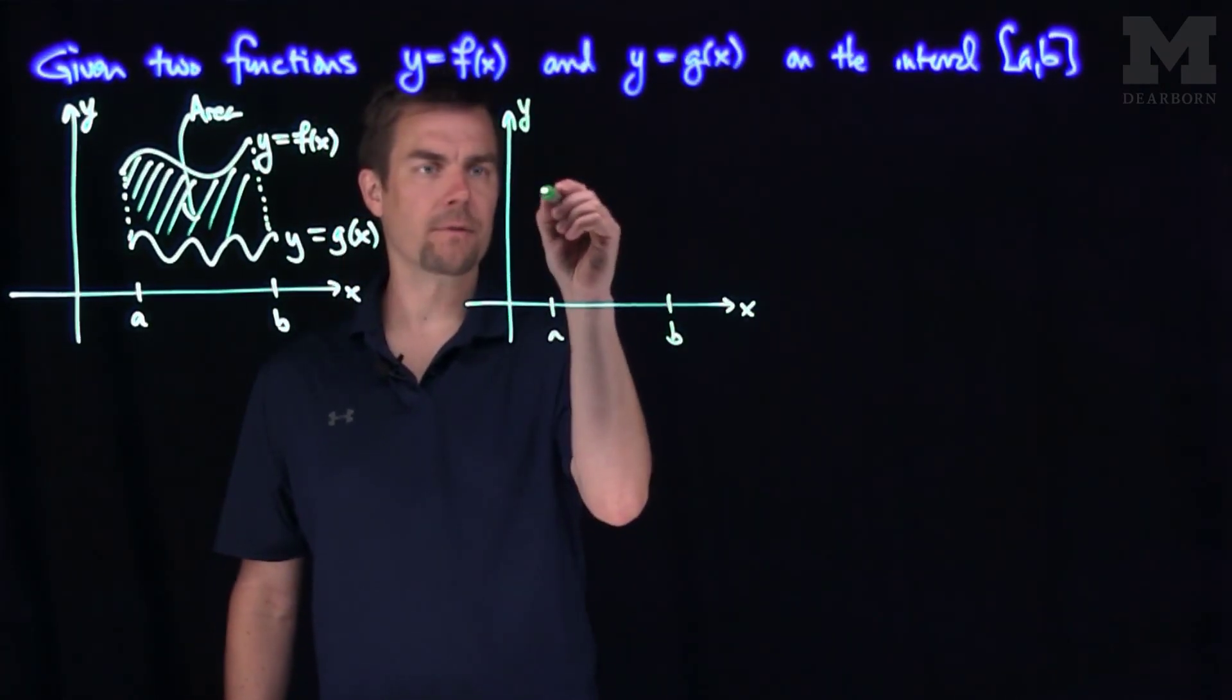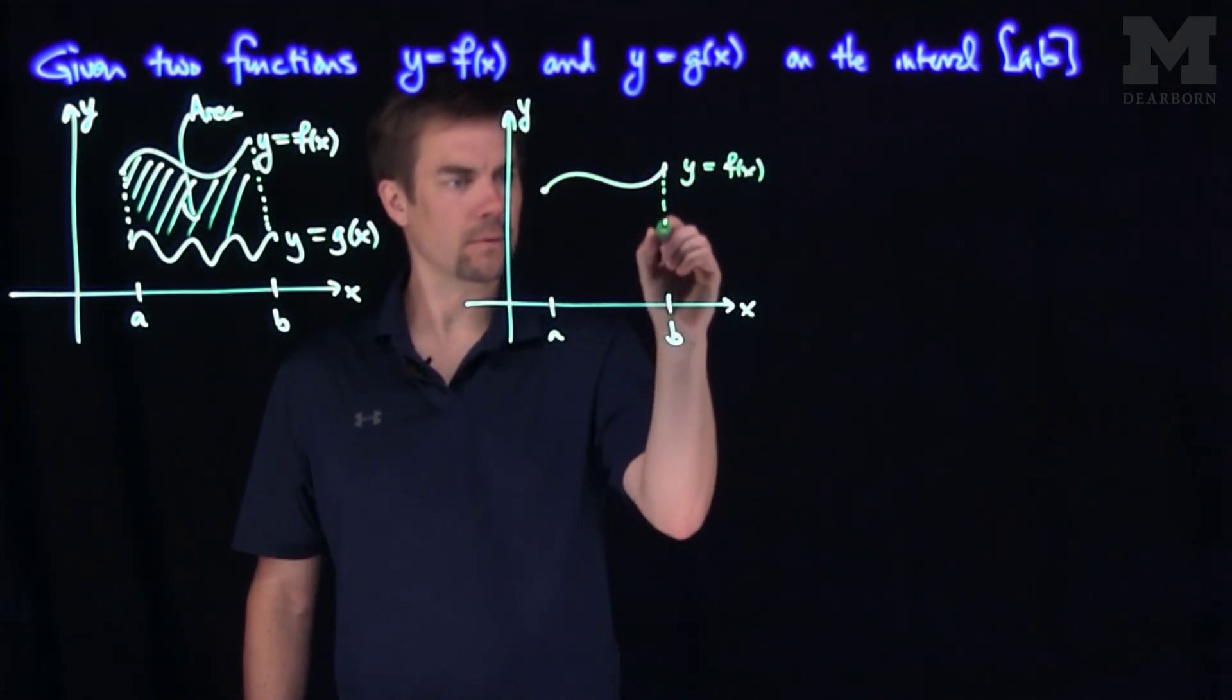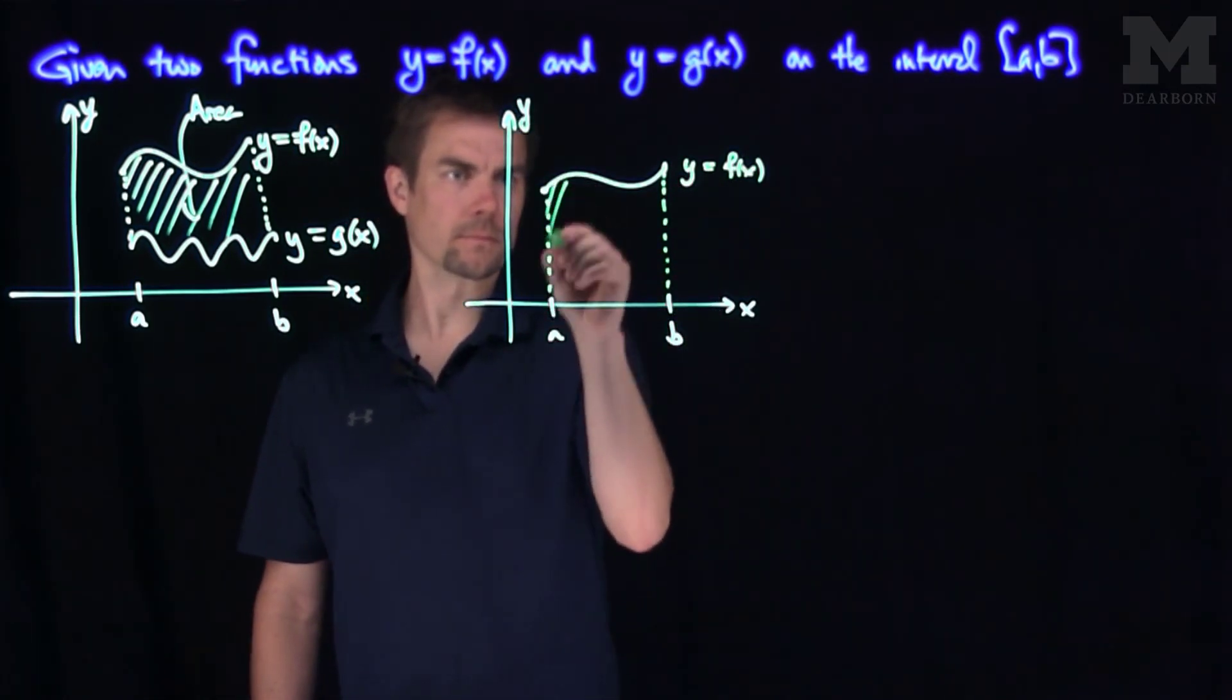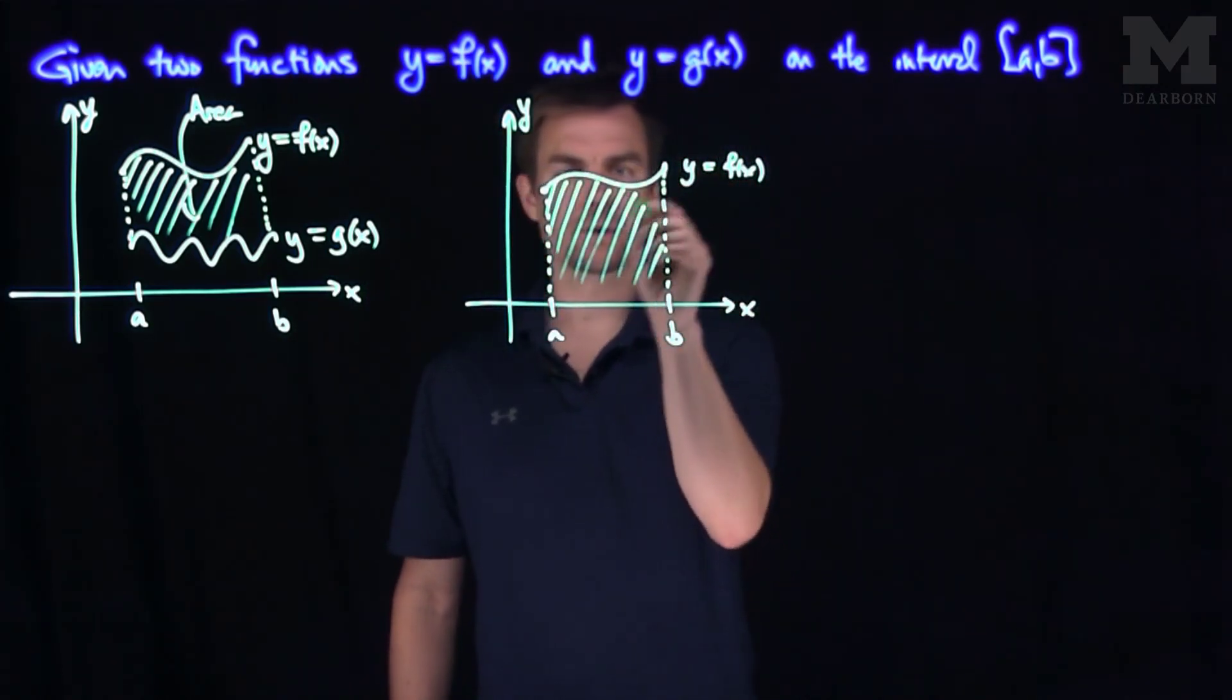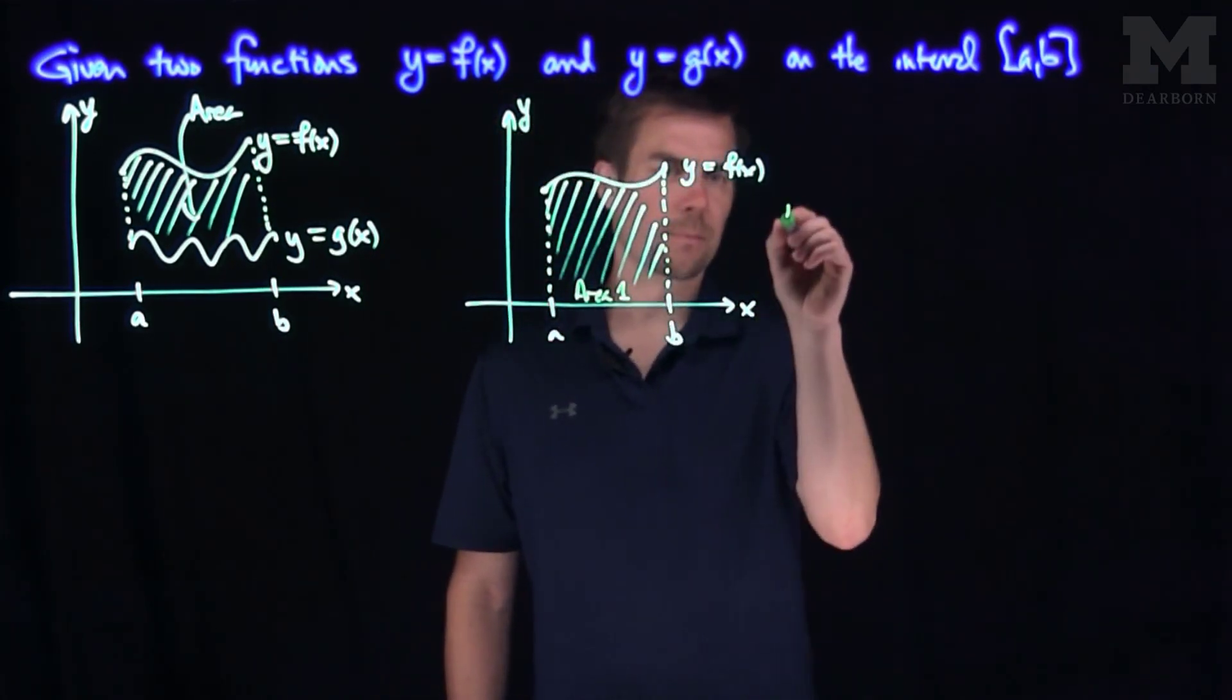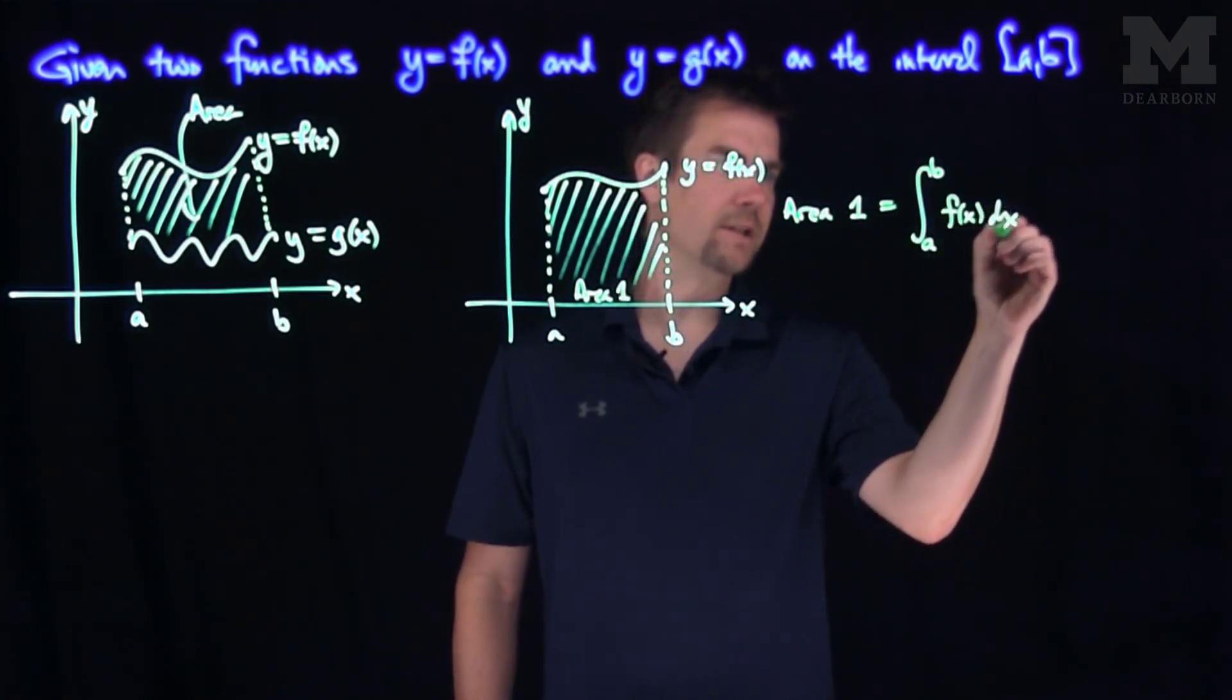there's a and there's b, and this time I'm only going to draw f, like this. That's our graph, y equals f of x. And we know, from calc one, how to find this area, the area that's above the x-axis and below the graph. So this area over here, let's call this area number one. Area number one is the integral from a to b of f of x dx.